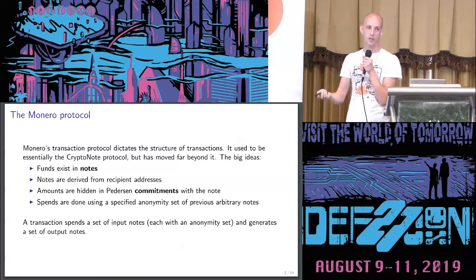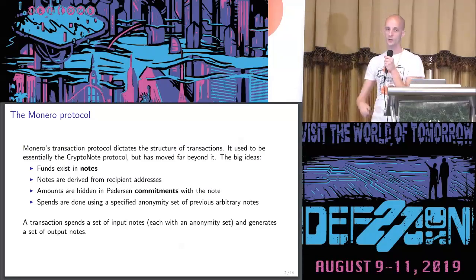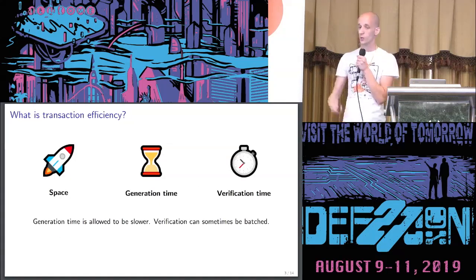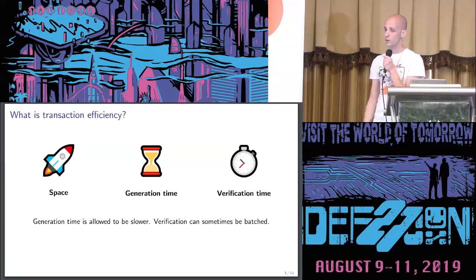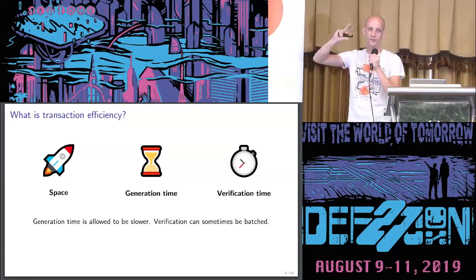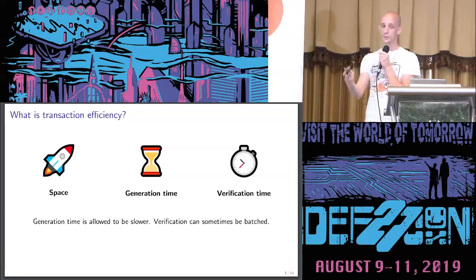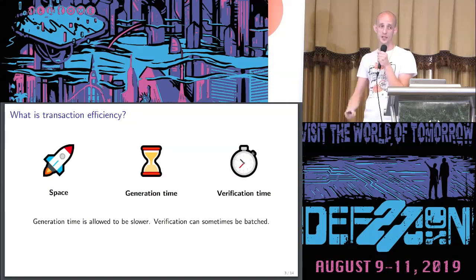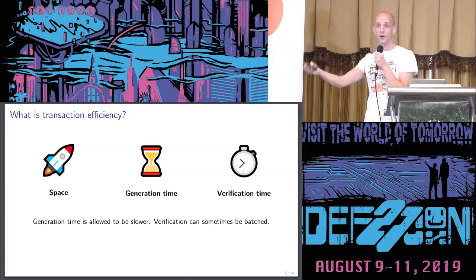The idea of an account in Bitcoin or Monero doesn't really exist at the protocol level. It's just a bookkeeping abstraction we use to tell you what your funds are. What do we mean by transaction efficiency? We care about it in terms of space-time in a physics sense. Space means transactions take up space on the chain, and provided everyone using the protocol is validating it, that space comes along for all time. Transactions also have a generation time and a verification time, and it's important to keep those two separate.